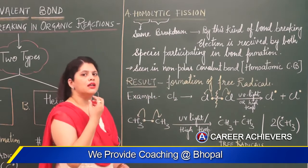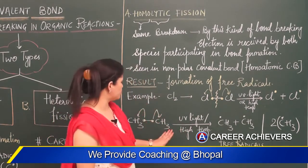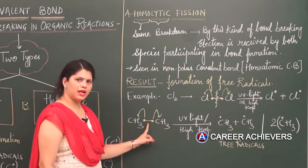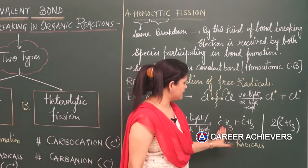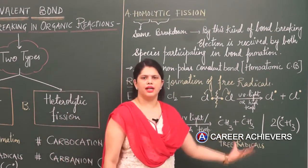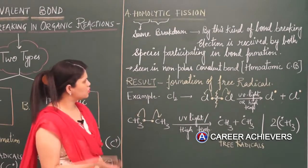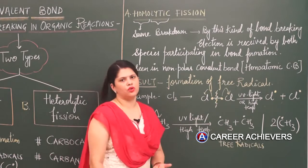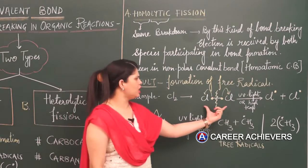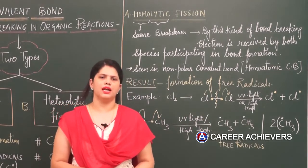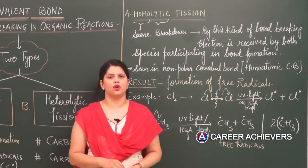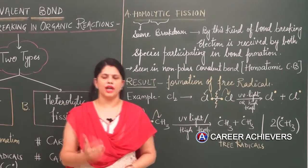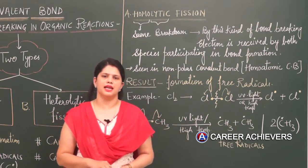The main nature of homolytic fission is that whenever it occurs, both species involved each take one electron. For example, in an ethane molecule, both species form free radicals by each taking their one bonded electron back. For homolytic fission to occur, two conditions are necessary: it always occurs in covalent bonds formed between homoatomic molecules, and it occurs in non-polar covalent bonds, where both elements pull the shared pair of electrons with equal force.